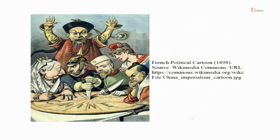This is a very famous cartoon published in 1898. China is represented as the pie here — it is a French cartoon — and the pie is being shared by different rulers: Queen Victoria, Kaiser Wilhelm II, Tsar Nicholas II, the representation of France (Marianne), and a Japanese samurai. They are basically dividing and splitting China among themselves, while a Chinese mandarin is shown shouting and protesting.